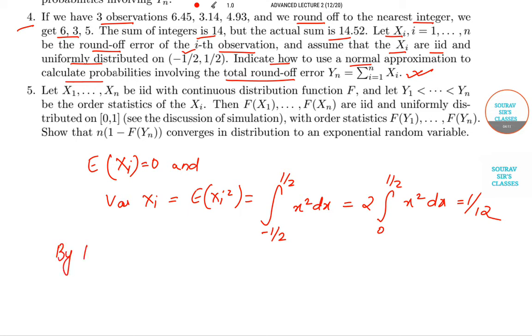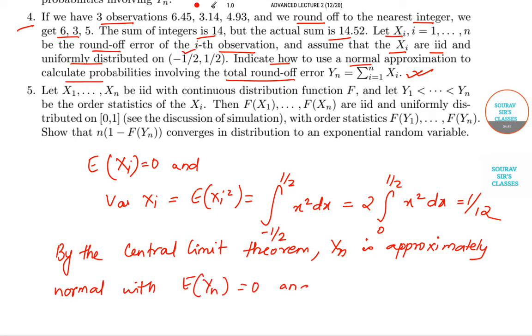So by the central limit theorem, Yn is approximately normal with expectation of Yn equal to 0 and variance of Yn equal to, just now we have calculated, it becomes n by 12.